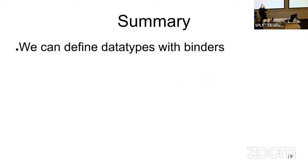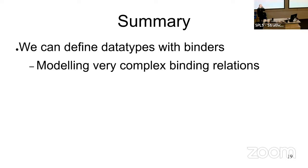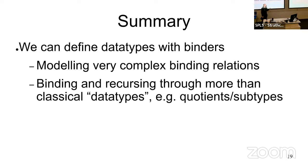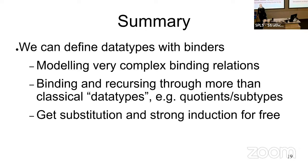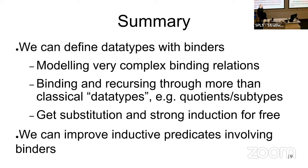To wrap this all up: In Isabelle, with this framework, which is not completely done yet, we can define datatypes of bindings that even model very complex binding relations. The big part is we can freely bind and recurse through other things that are not necessarily datatypes in a classical sense, but other things like quotients or subtypes, as long as they behave well in a certain sense. We get this very strong induction principle for free and we get a lot of constants and functions for free, like substitutions. We can improve these inductive predicates that use these types, so we can also assume the same strong induction principles for these predicates when it is possible and sound to do so. Thank you.